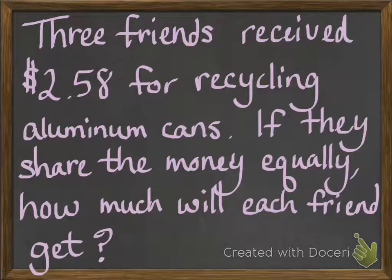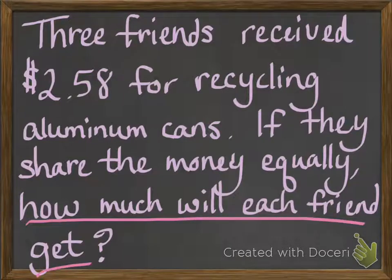Here's our example problem. Three friends receive $2.58 for recycling aluminum cans. If they share the money equally, how much will each friend get? So the problem is asking me: if they had this money, $2.58, and they're going to share the money equally, how much is each friend going to get? How much would one friend get?